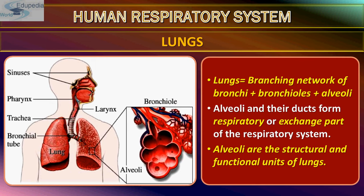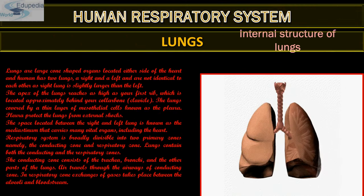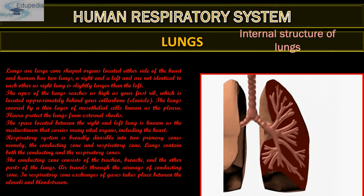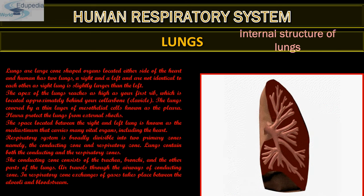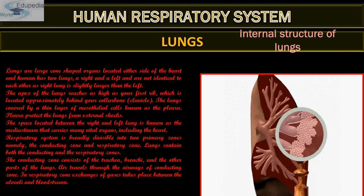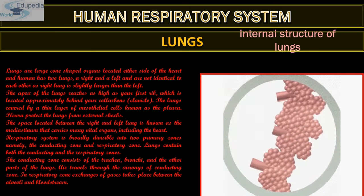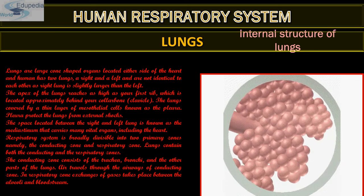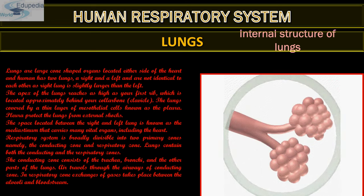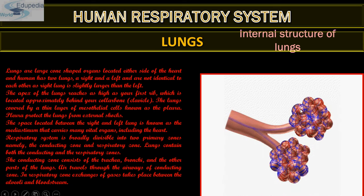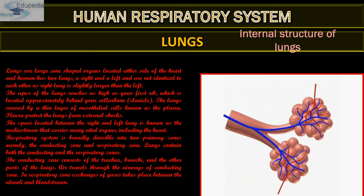The lungs form a branching network of bronchi plus bronchioles plus air sacs. Alveoli and their ducts form the respiratory or exchange part of the respiratory system. Alveoli are the structural and functional units of the lungs — they appear as grape-like sac structures. Both lungs have branching that ultimately leads to alveoli, which have a capillary or blood vessel supply for gas exchange.